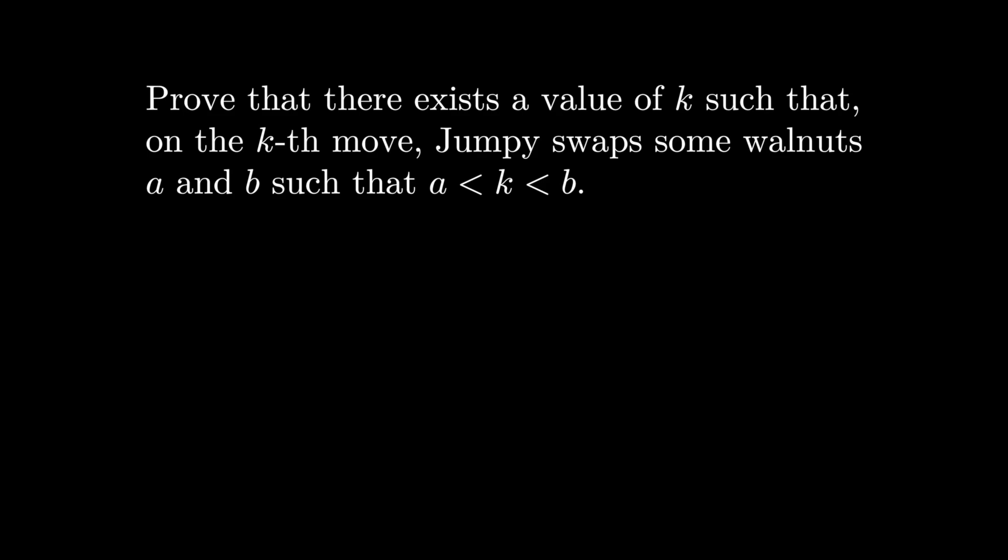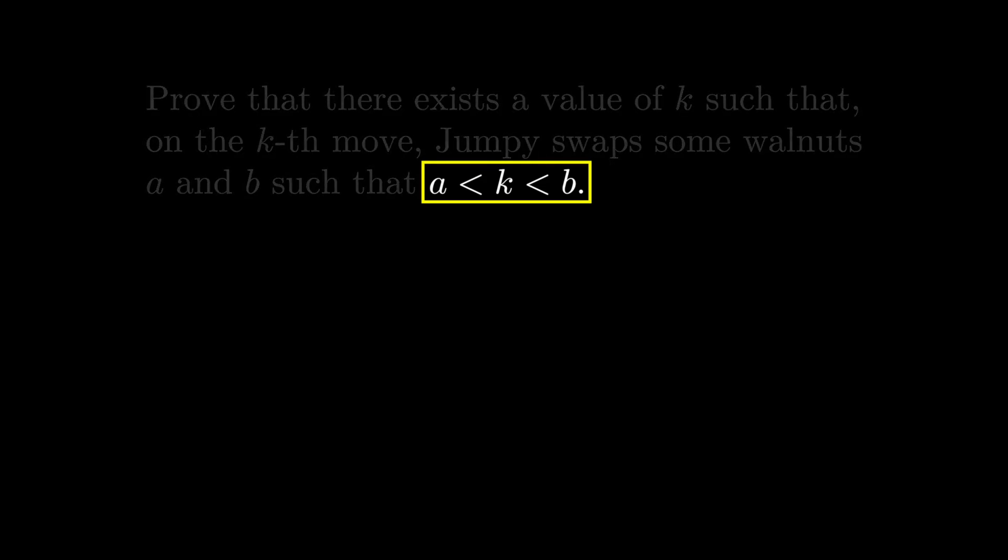So to make some progress in this problem, we somehow want to simplify the information that we have into only the info that is important to us. Looking again at the statement that there's a k such that a is smaller than k is smaller than b, the exact values of a and b do not matter to us. The only thing we want to know is that a is smaller than k, b is larger than k, so how they are relative to k is the only important piece of info. So maybe we should think of all the nuts other than nut k as belonging to two different categories.